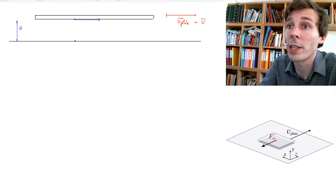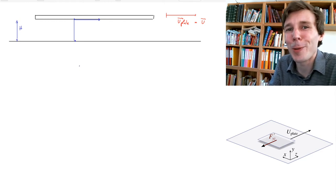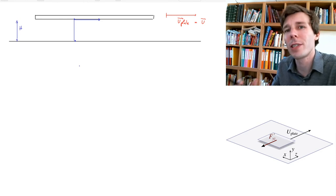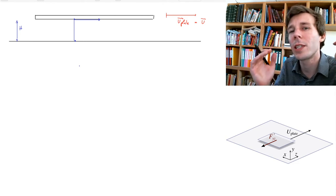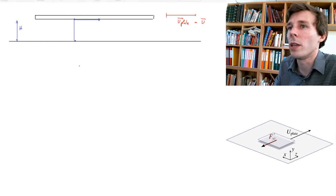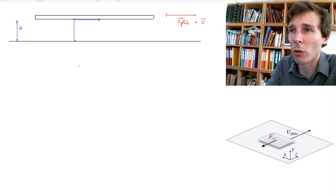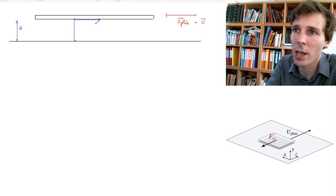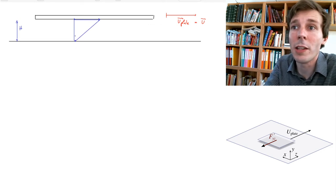What is the velocity distribution between those two points? We simply do not know — it could be anything. However, in a very simple case where the plate is moving at a very low height and relatively low velocity, we can guesstimate. We know the Reynolds number is very low, the flow is laminar, and so the simplest possible distribution we can imagine is a linear one.